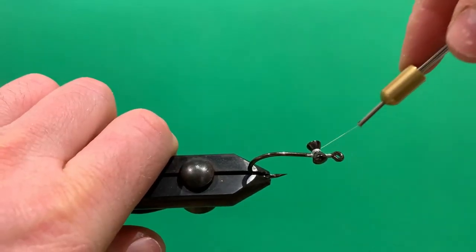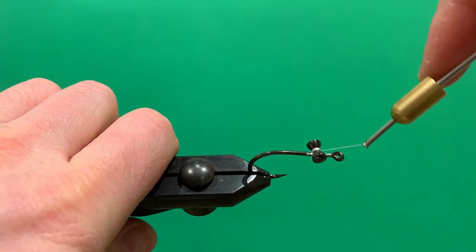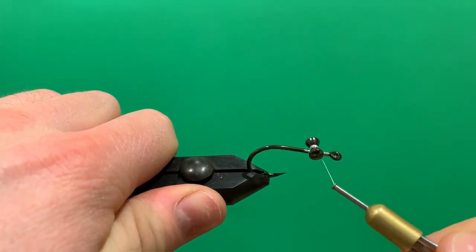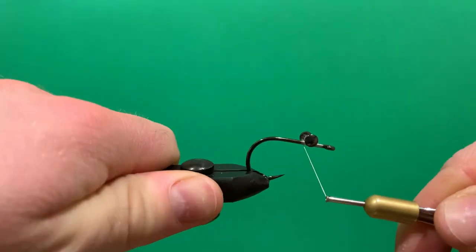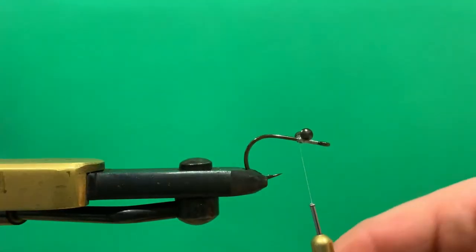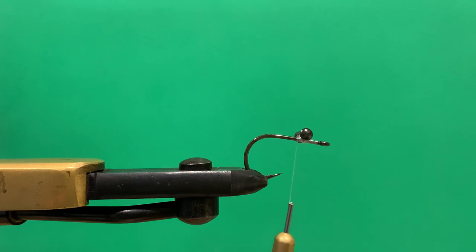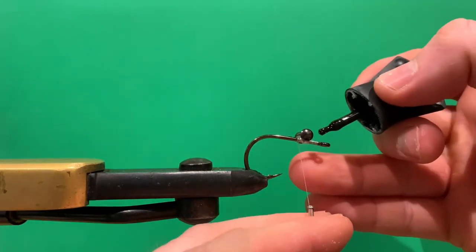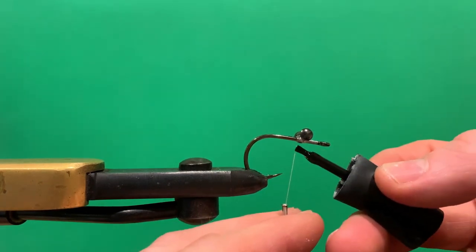I'm just going to wind the thread underneath the eyes like this. Pull tight—that'll help cinch the wraps together. If you're worried, you can put a little drop of super glue onto these eyes to help lock them in place. Just a small bit on each side and a little underneath as well.